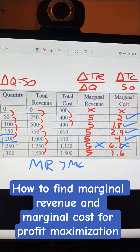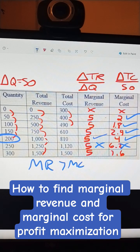So the answer is I would produce 200 units if I was profit maximizing and charge a price of four. My profit would be the difference between 1,000 and 810, which is 190.